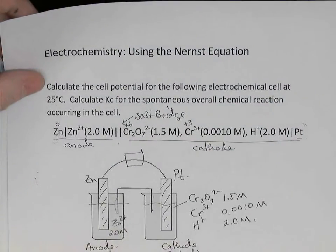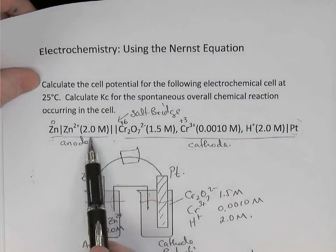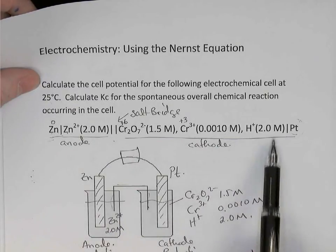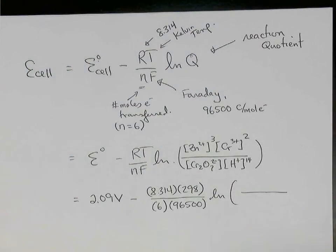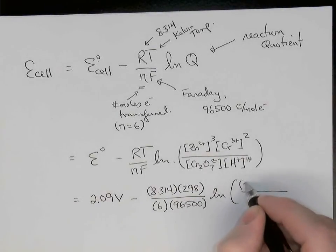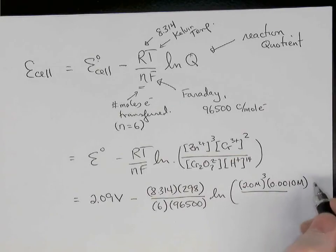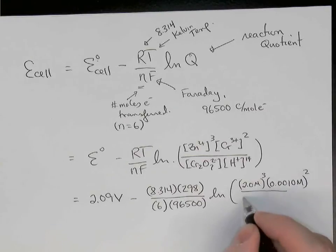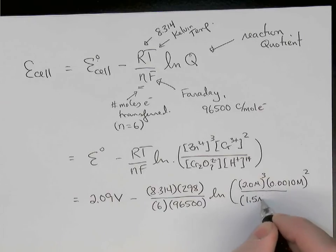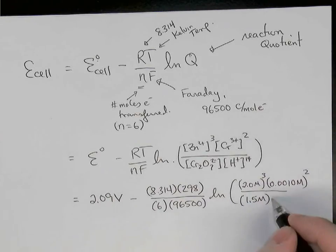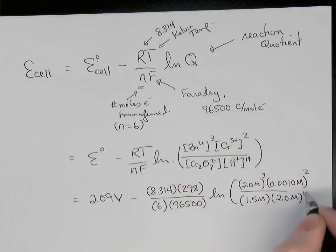and now let's remember what our concentrations were. In the original question, you might want to pause the video and try this yourself. The concentrations were given here, so let's substitute those concentrations into our expression. So zinc's concentration was 2 molar cubed, times the chromium concentration, which is 0.0010 molar. And that's being squared, divided by the dichromate concentration, which was 1.5 molar. And then this hydrogen concentration of 2 molar has to be raised to the power of 14.